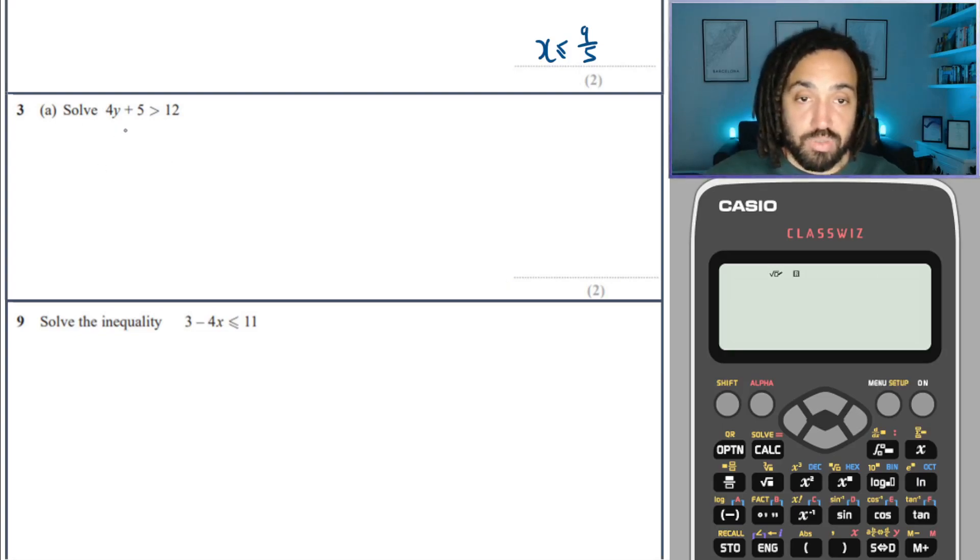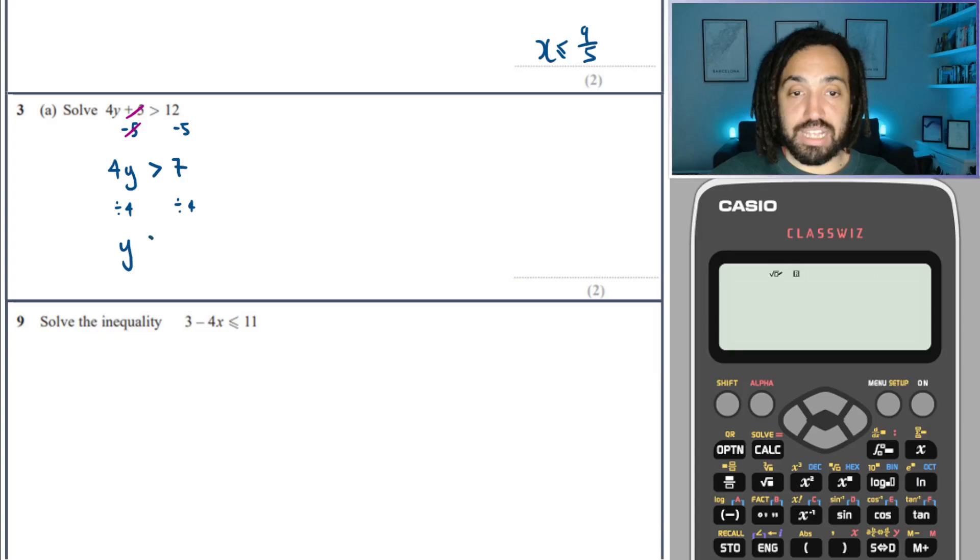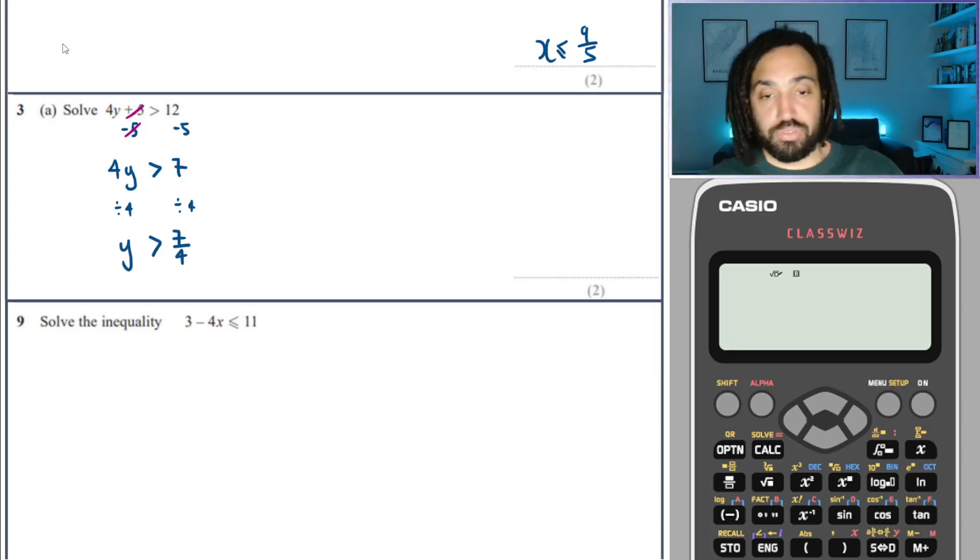Same thing, to solve this inequality I would subtract 5 from both sides. That will then cancel the plus 5 and the minus 5. That will leave me with 4y on the left, greater than 12 minus 5 is 7. And then we can divide both sides by 4. So that gives me y, and that is greater than 7 over 4. Beautiful.